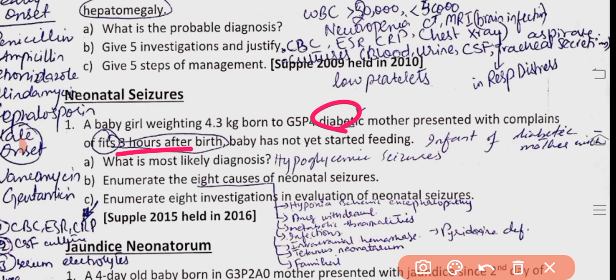Eight causes of neonatal seizures: perinatal asphyxia/hypoxic ischemic encephalopathy, intracranial hemorrhage, metabolic abnormalities (hypoglycemia, hyponatremia, hypocalcemia, hypomagnesemia), infections (meningitis, sepsis, TORCH infections), pyridoxine deficiency, drug withdrawal, and familial seizures. Investigations: CBC, ESR, CRP, CSF examination, cranial ultrasound, CT scan, EEG, serum electrolytes, calcium, magnesium, urea, creatinine, RFTs, LFTs, and blood culture and sensitivity.